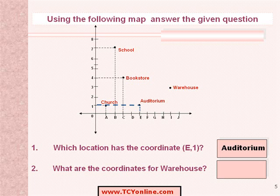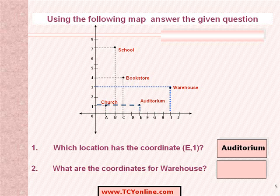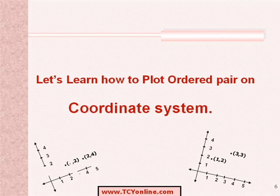According to the second question, we need to find the coordinates for the warehouse. First of all, we would locate the warehouse on the map. Now, we will draw two straight lines, one horizontally and one vertically from the warehouse. This leads us to the coordinates i, 3. Now, let us learn how to plot an ordered pair on the coordinate system.